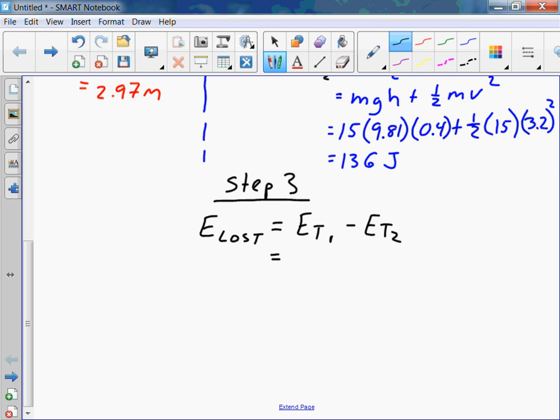So her gravitational potential energy is decreasing, but not at the same rate that the kinetic energy is increasing. So some of that energy, some of that decrease in gravitational potential energy is not being converted to kinetic. It's being lost in friction.